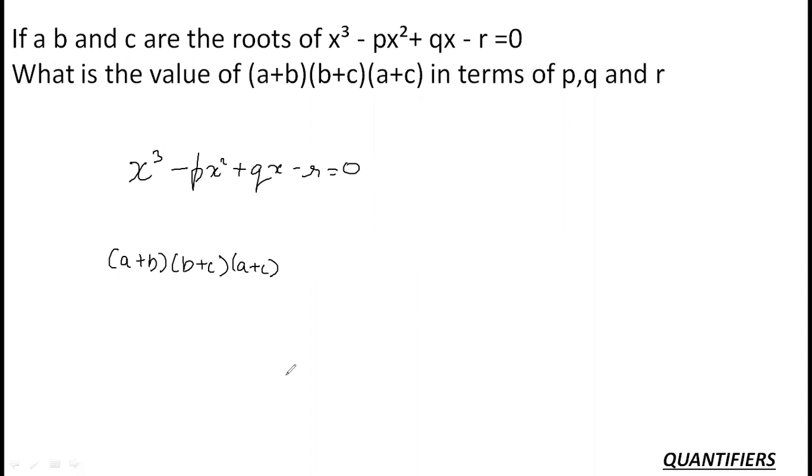Now, the first thing that comes to everyone's mind and is correct, that what is the sum of roots for this? The sum of root of this is a plus b is equal to minus b upon a, which means that a plus b plus c is equal to p. Because it's minus p of minus of minus p. So, a plus b plus c is p.